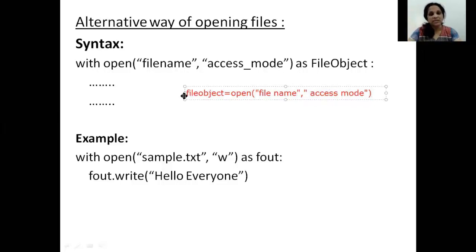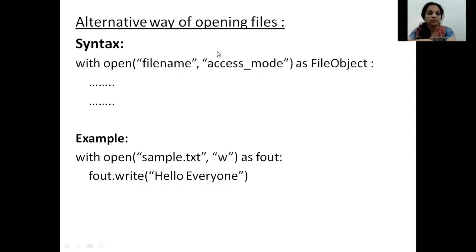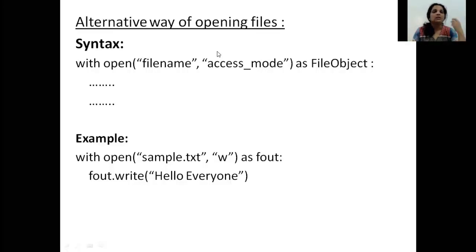Now instead of this, there is an alternative method of opening a file and that is by using the keyword `with`. You write the keyword `with` followed by the name of the function which is `open`. The file name and the access modes remain the same and then you write `as` file object. When you compare to the previous method, there you wrote the file object is equal to the function open and the parameters. Here we write `with` the function name, the parameters, `as` file object. This file object is going to connect you to this particular file.